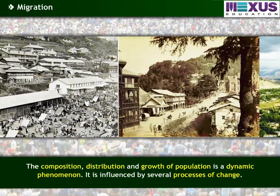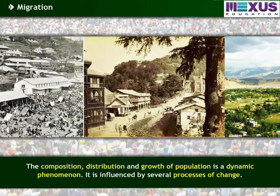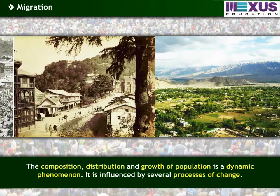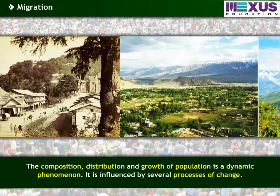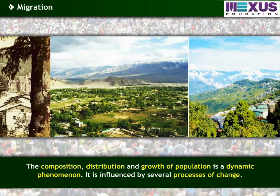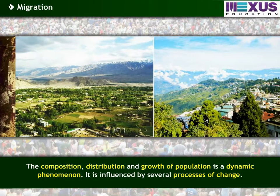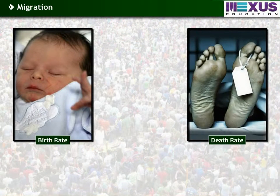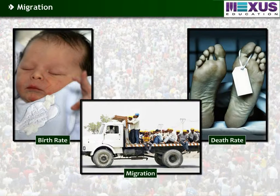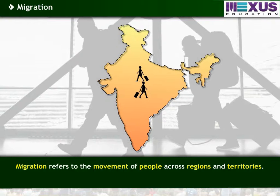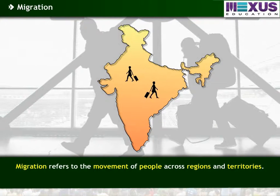The composition, distribution and growth of population is a dynamic phenomenon, influenced by several processes of change. These processes include the birth rate, death rate, and migration. Migration refers to the movement of people across regions and territories.